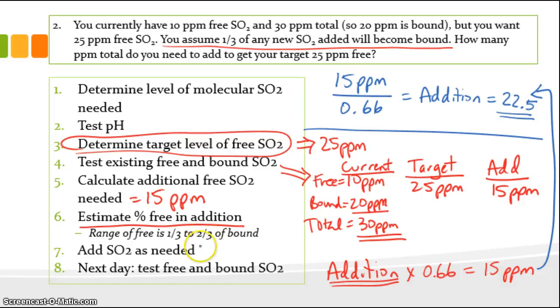If we just rearrange that formula, then we have 15 parts per million divided by 0.66, just doing the algebra, equals our addition amount. So, if we divide 15 by 0.66, we end up with approximately 22.5. So our total addition would be 22.5. And that's what we'd add. So we add 22.5 parts per million. And we know that we can check our work by just saying we know two-thirds of that addition will become free. Two-thirds of 22.5 is 15, and that's exactly what we need to add. So the 15 that we add plus the 10 that we had to start with gives us our target of 25 parts per million.